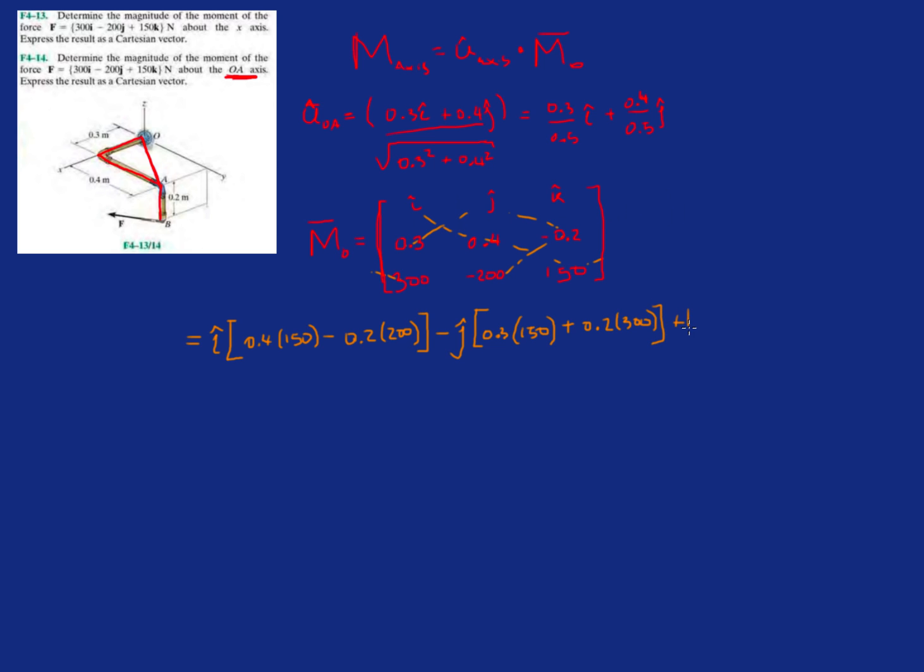And last but not least, the k component. It wraps around like this, comes back out here like pac-man, and it's 0.3 times minus 200 minus 0.4 times 300.